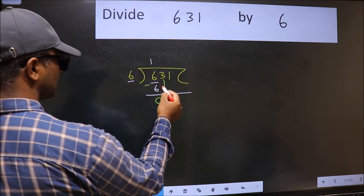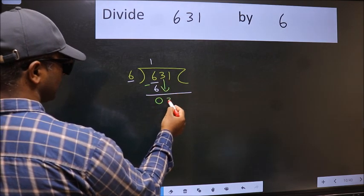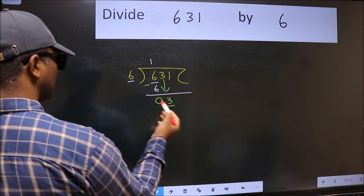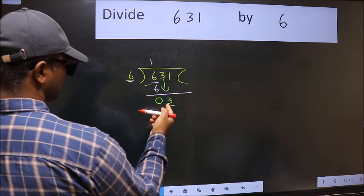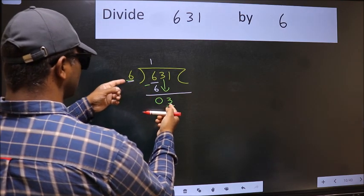After this, bring down the beside number. So 3 down. Now here we have 3 and here 6. 3 is smaller than 6.